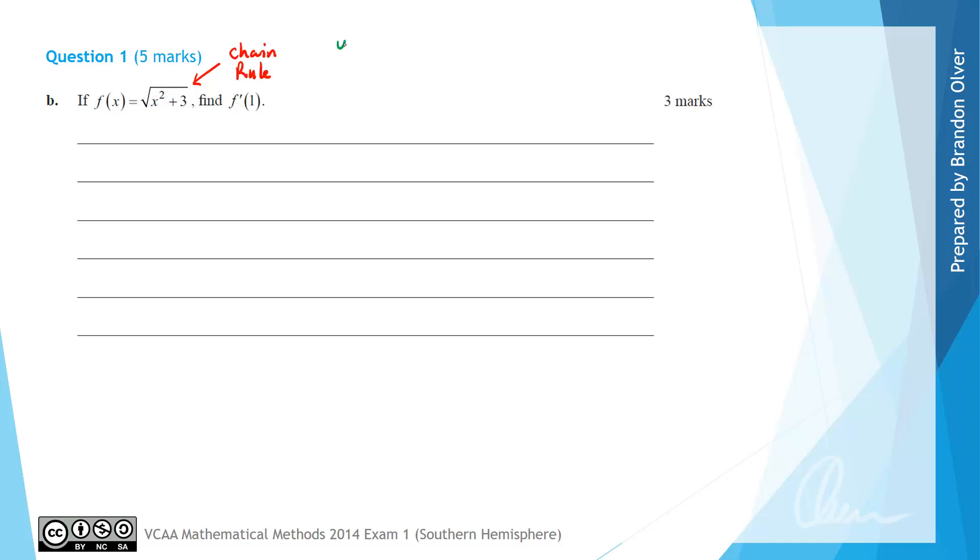As we just discussed, y is the square root of u, which can be written as u to the power of a half, where the function u is the inner function x squared plus 3. Next we calculate dy/du, which is going to equal power out the front, and 1 off the power gives a half u to the power of negative a half,